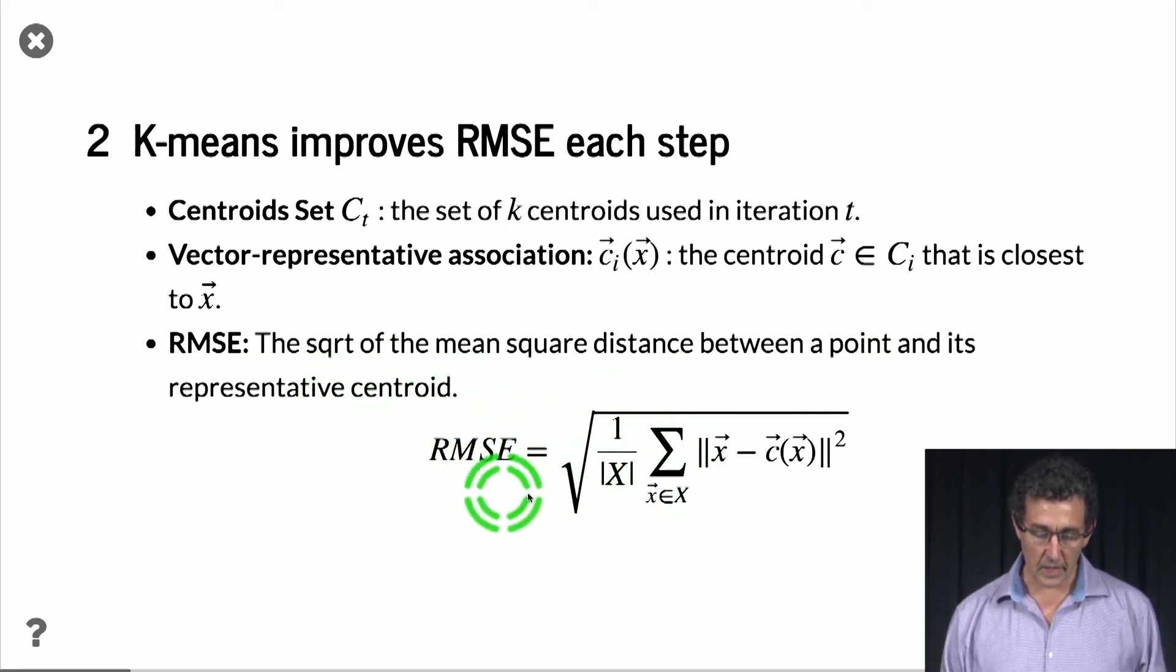So this is basically the formula for it. It's the square root of 1 over |X| simply for taking the average of all of these terms in the set of examples X. For each x, we take the difference between the vector x and its representative, and we take the norm of that squared. So that's the squared length of this distance. And that is what is defined to be the RMSE.